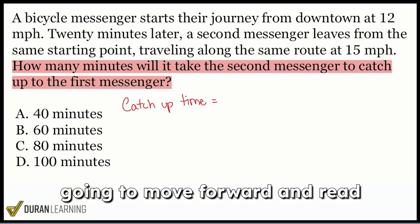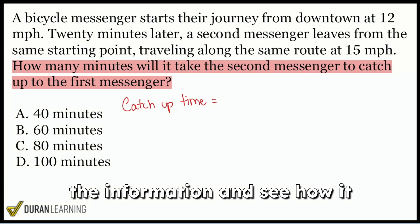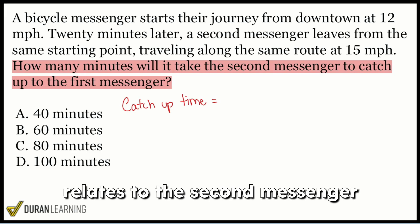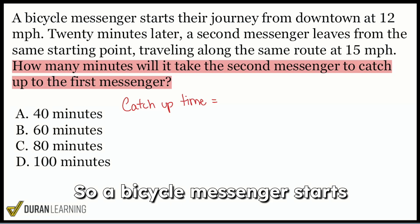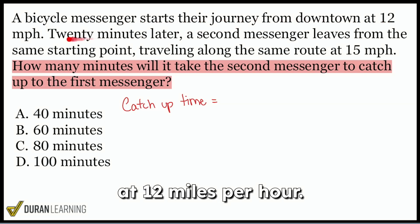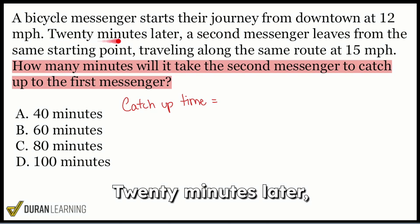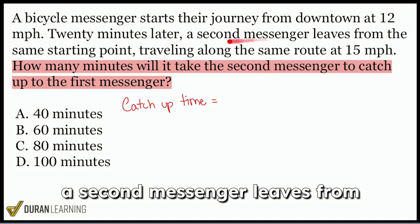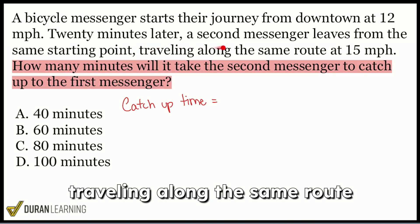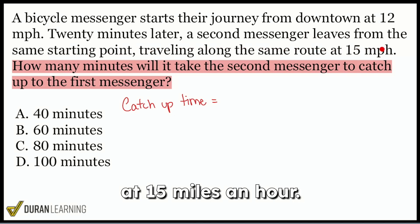So with that said, now what I'm going to do is I'm going to move forward and read the information and see how it relates to the second messenger catching up to the first one. So a bicycle messenger starts their journey from downtown at 12 miles per hour. 20 minutes later, a second messenger leaves from the same starting point, traveling along the same route at 15 miles an hour. How many minutes will it take to catch up?